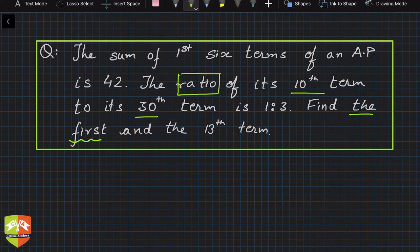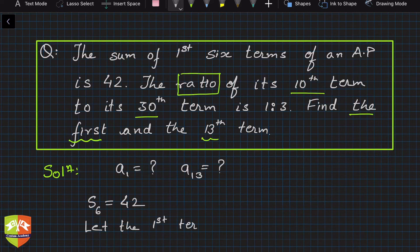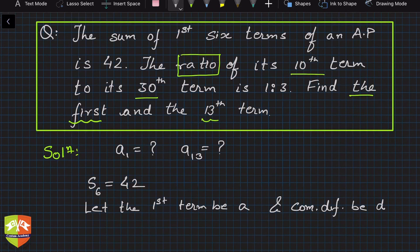So let's keep an eye on what exactly we have to find out: first and thirteenth term. Solution - we have to find out a₁ and a₁₃, so it's always good to write the objective in the first step itself. Now what's given? Let the first term be a and common difference be d.